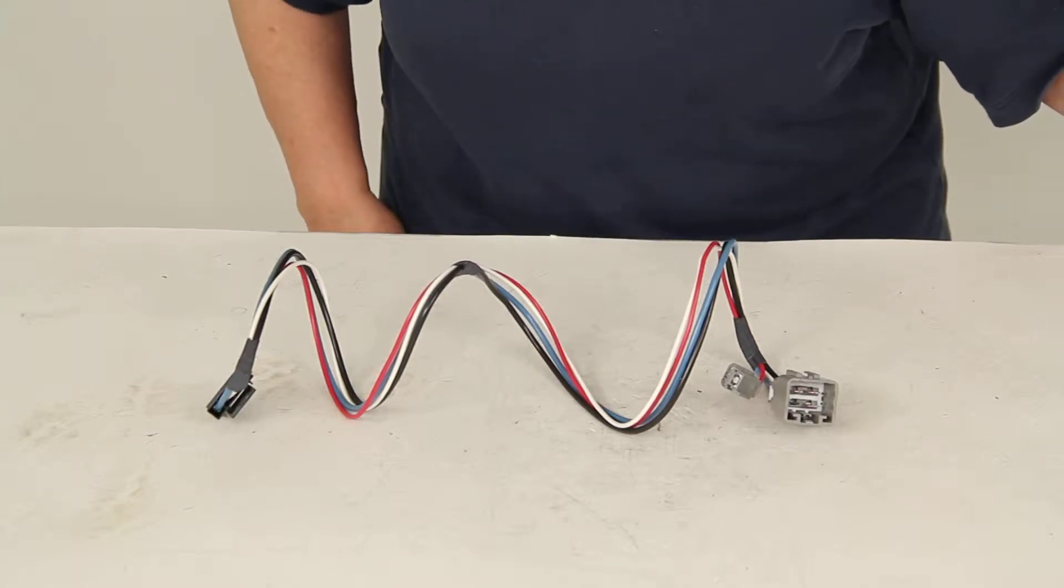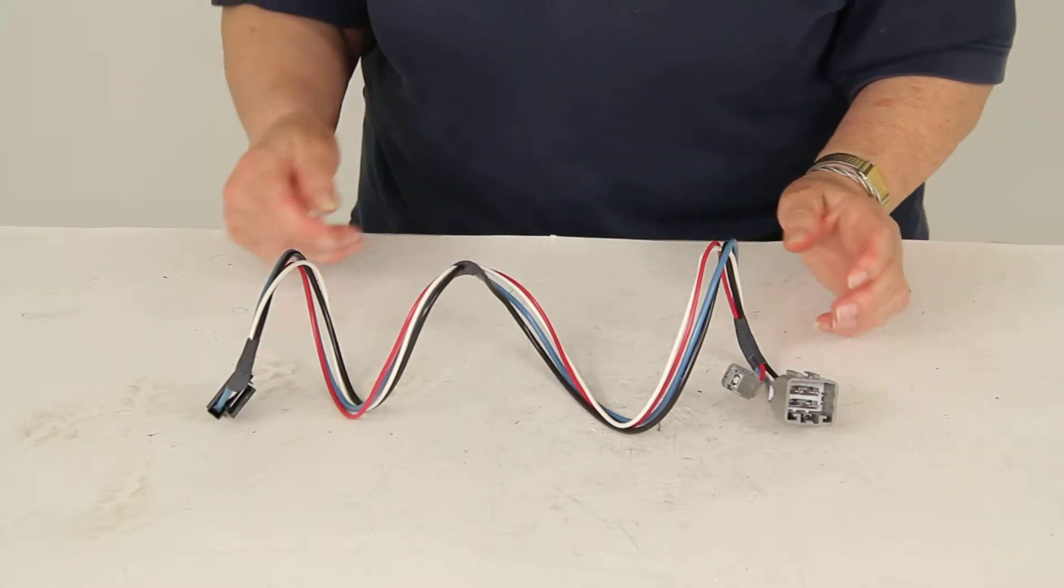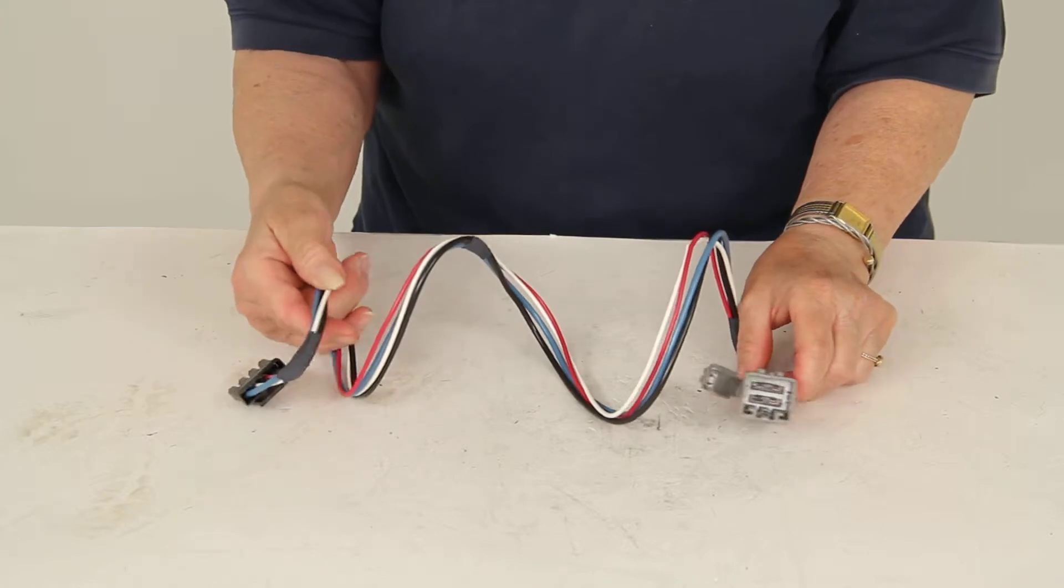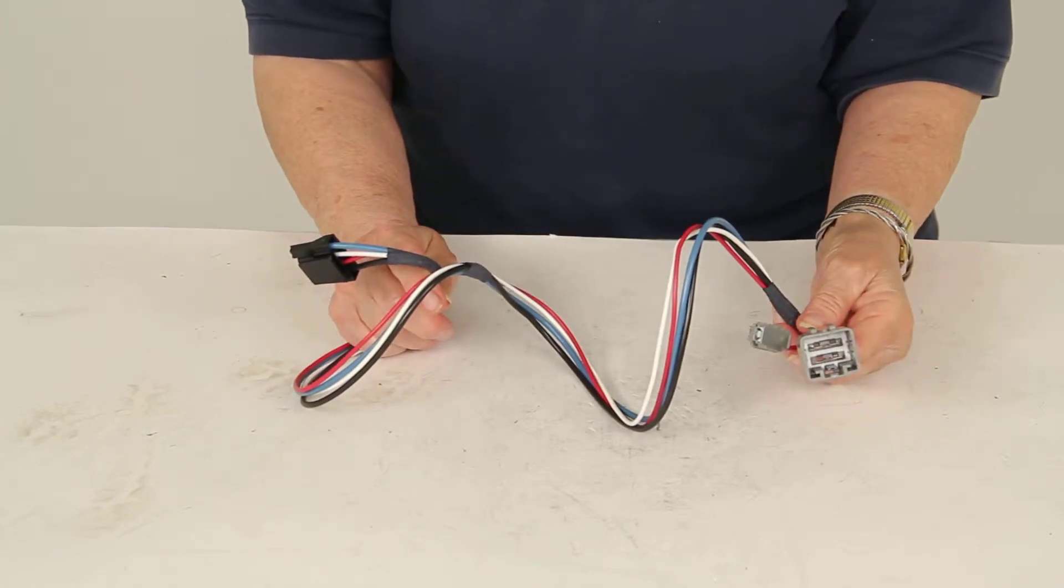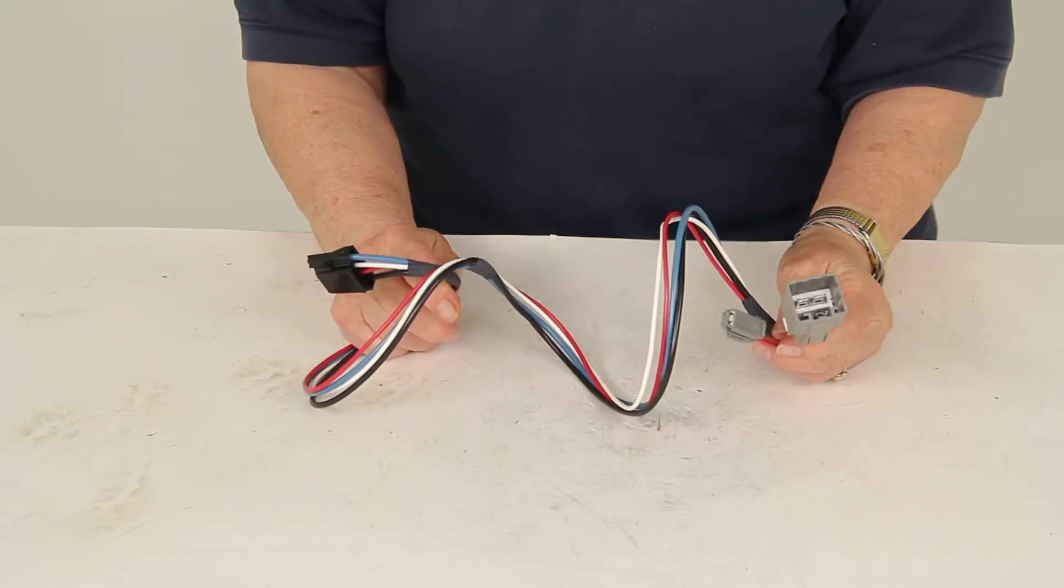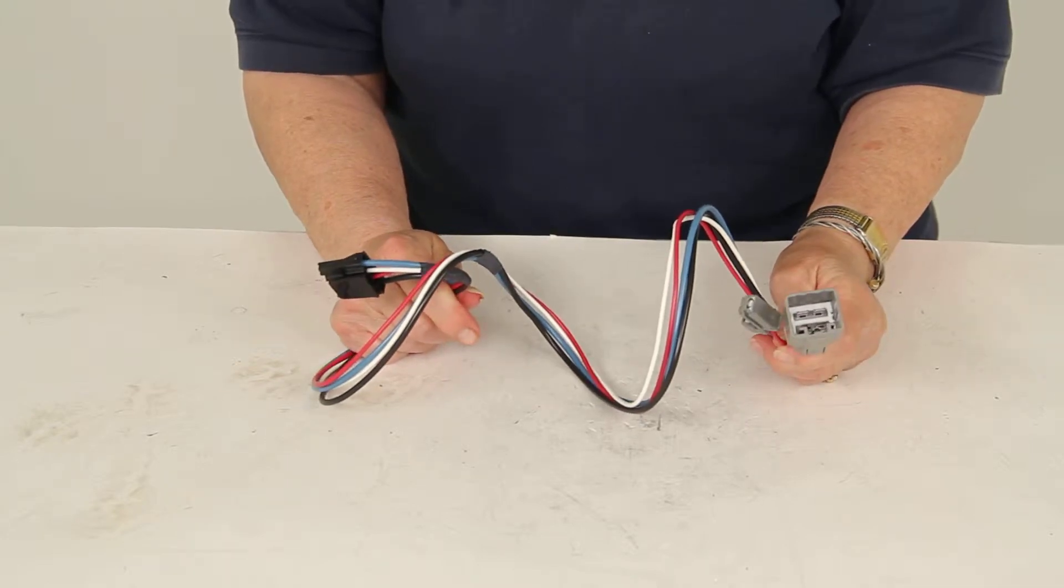Today we're looking at part number HM53055 from Hopkins. This is a simple brake control wiring adapter for your 2013 Dodge Ram with factory tow package.